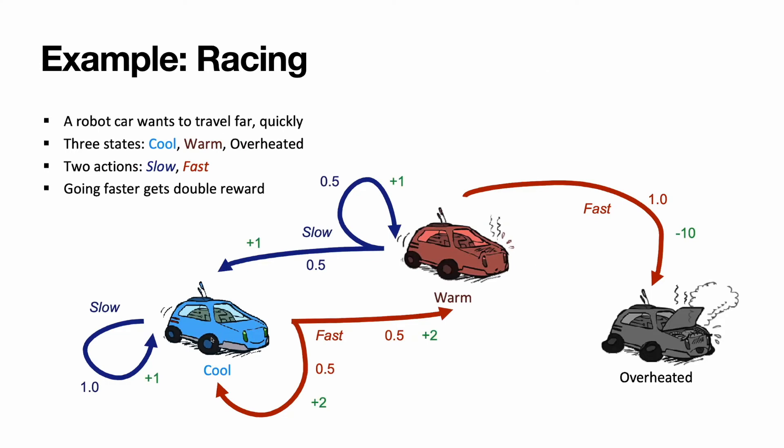There is an automobile, and there are three states: cool, warm, and overheated. Overheated state ends the episode. The actions are move slow and move fast. The transition between states are displayed with arrows, and reward which is associated with appropriate transition is depicted with numbers above the arrow. We start in a cool state.